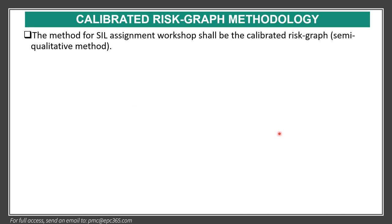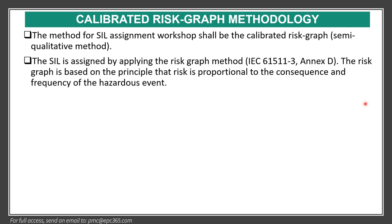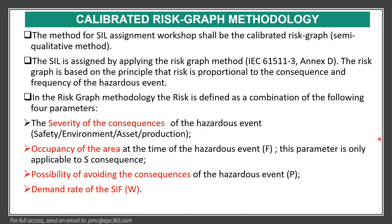The calibrated risk graph is a semi-quantitative method. It is based on IEC 61511, Annex D. For the risk graph, we have to get agreement about safety, environmental asset, and production. Key parameters include occupancy of the area (F), the possibility of avoidance of consequences (P), and the demand rate of the SIF.